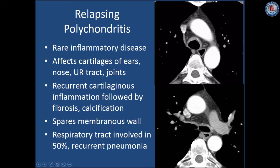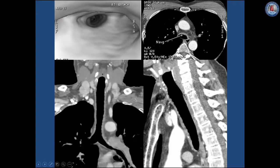Relapsing polychondritis is a rare inflammatory disease affecting the trachea diffusely, involving the cartilages of the ears, nose, upper respiratory tract, and joints. It is caused by recurrent cartilaginous inflammation followed by fibrosis and calcification, and typically spares the membranous wall which does not contain cartilage. The respiratory tract is involved in 50 percent of cases and many patients suffer from recurrent pneumonia. On imaging, the cartilaginous wall is diffusely thickened and contains calcification in both the trachea and main bronchi, typically sparing the membranous wall. In a different patient, diffuse thickening of the anterior wall with calcification sparing the membranous wall is seen, and on the coronal view the cartilaginous portions are diffusely thickened laterally as well.